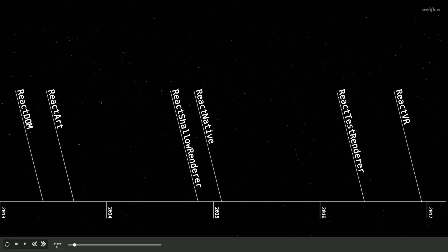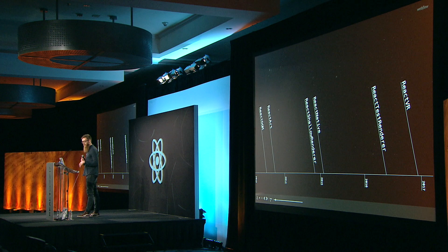We saw React Art for canvas, SVG, and VML. React shallow renderer, React test renderer that supported basically JSON views of it, and we saw React Native as the first official real renderer that could do something else — useful power to different platforms. And now we have an alpha release of React VR. The community saw that this was possible, that React could do more, so they began to experiment.